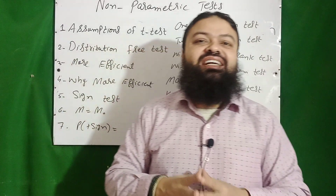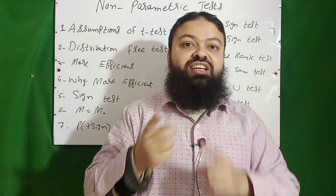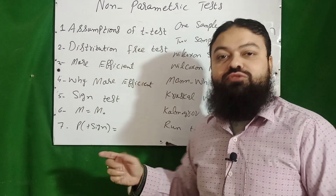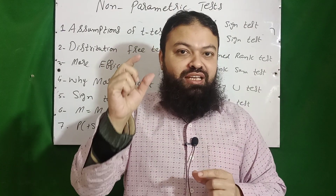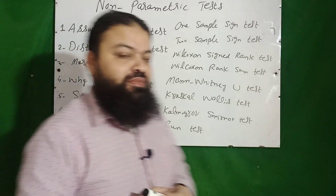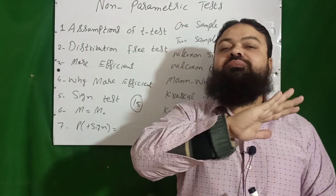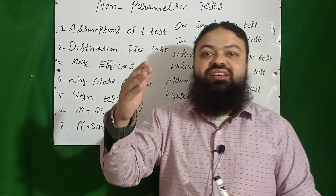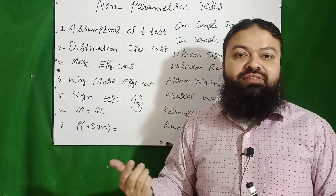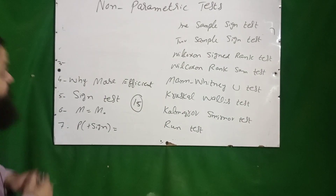The first non-parametric test is the sign test, which is used for testing the median. The hypothesis is: probability of plus sign equals probability of minus sign equals 1/2. This test is based on signs. For a given median value — for example, 15 — all values equal to 15 are discarded. Values greater than 15 receive a plus sign (e.g., 16 − 15 = +), and values less than 15 receive a minus sign.